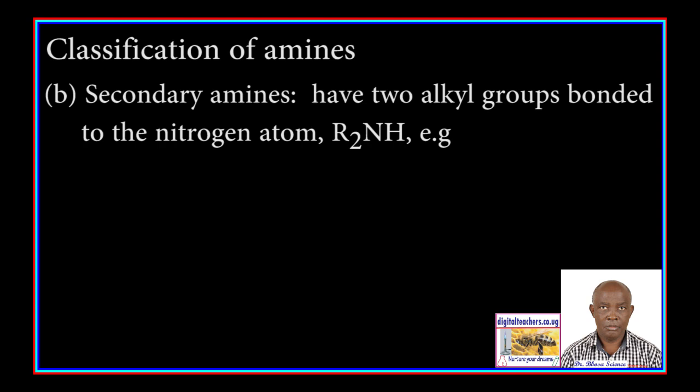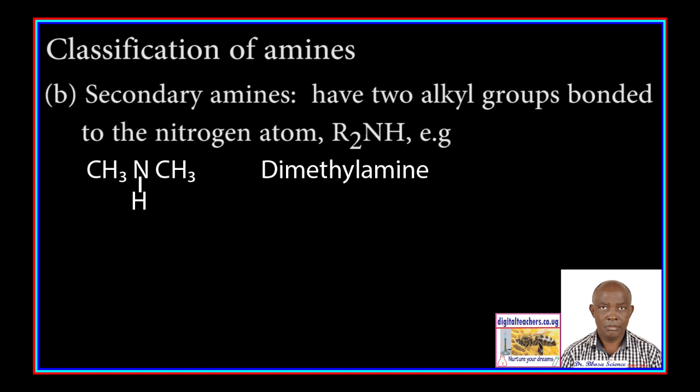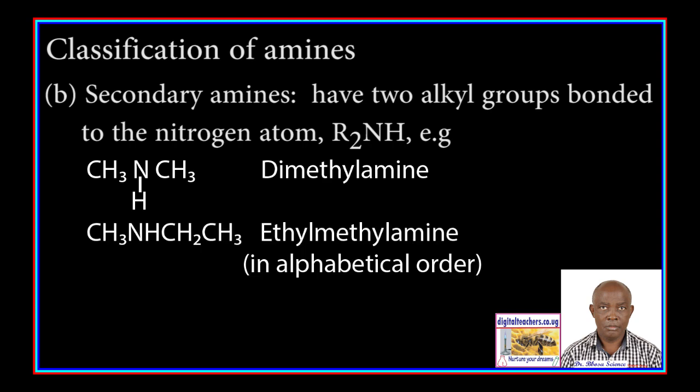B. Secondary amines have two alkyl groups bonded to the nitrogen atom, i.e. R2NH. For example, dimethylamine and 2-ethyl-methylamine. The alkyl groups are named in alphabetical order.